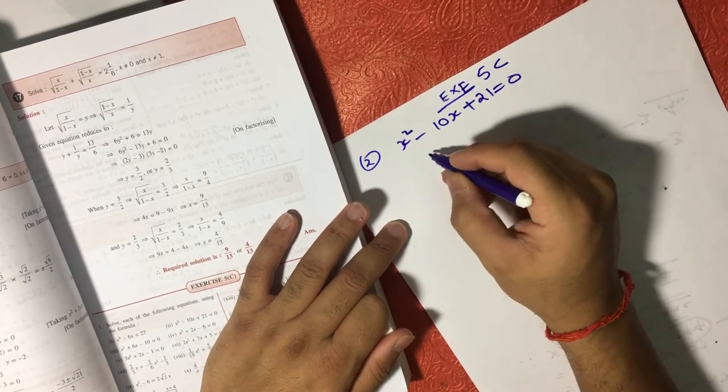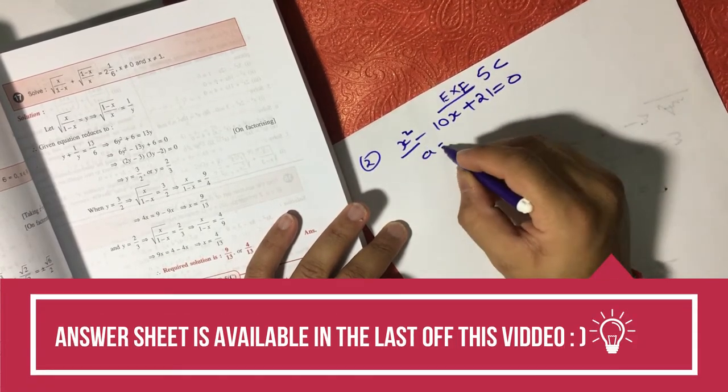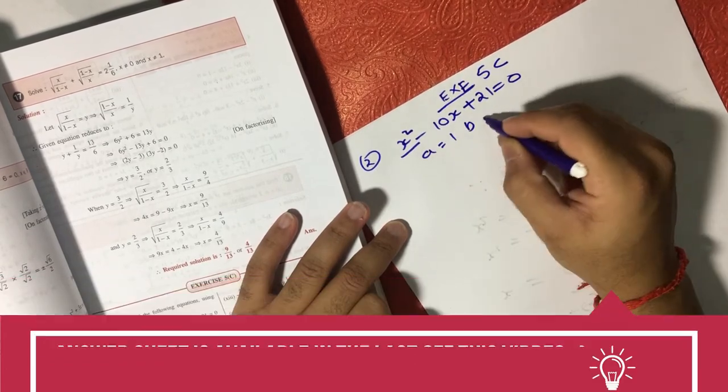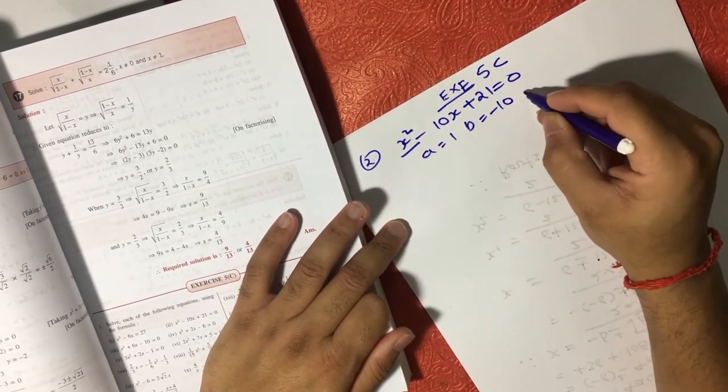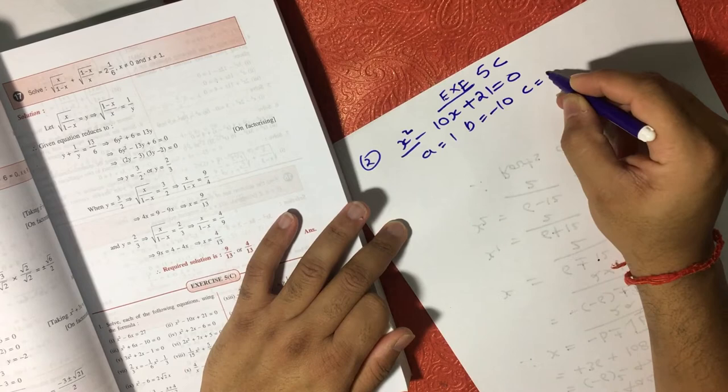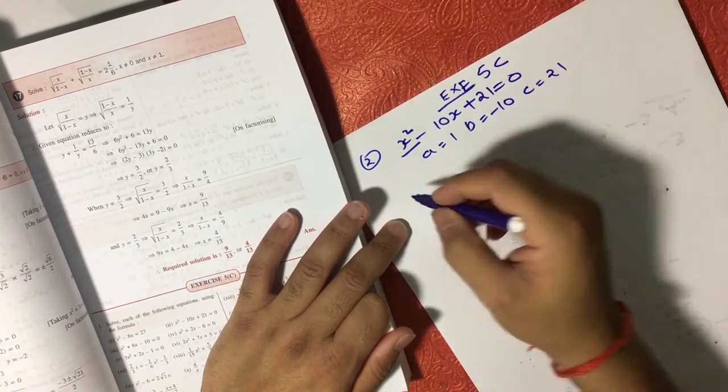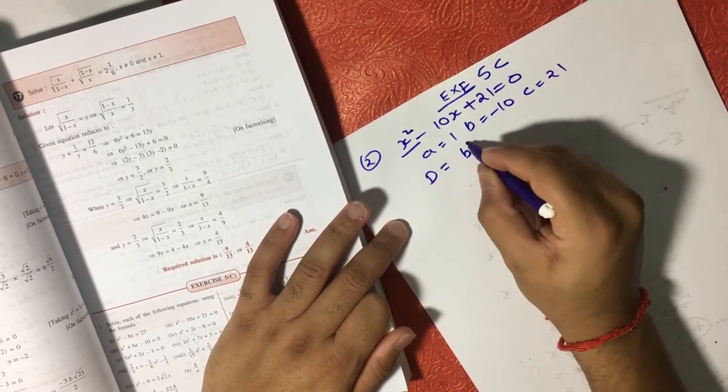So a for this x² is equal to 1, b we know is -10, and c is 21. Now we have a formula D = b² - 4ac.